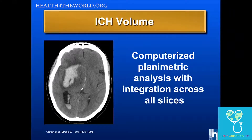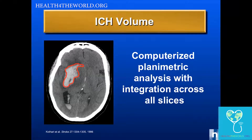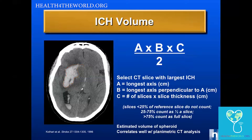How do you calculate hematoma volume? You can use a computerized algorithm with planimetric analysis, drawing a line around the hemorrhage on each slice and integrating across slices. But a simpler method everyone can use is the ABC over 2 formula, which estimates the volume of a spheroid. A is the longest axis on the largest CT scan slice, B is the longest axis perpendicular to that, and C is the number of slices with hemorrhage times the slice thickness.